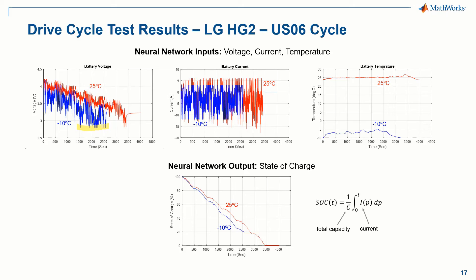SOC estimation algorithms effectively function as inverse models which estimate the open circuit voltage, directly or indirectly, and associate the estimated open circuit voltage with state of charge. While for a neural network algorithm, open circuit voltage is not directly estimated with the model, the learned relationship between SOC and terminal voltage characteristics still in theory rests on the relation between open circuit voltage and SOC, because open circuit voltage is the true electrochemical indicator of state of charge. When there is large voltage deviation from the open circuit voltage, like for the negative 10 degrees C case, it is much more difficult for these algorithms to accurately and smoothly estimate SOC, and that's why we've chosen such challenging cases to develop and evaluate our algorithms.